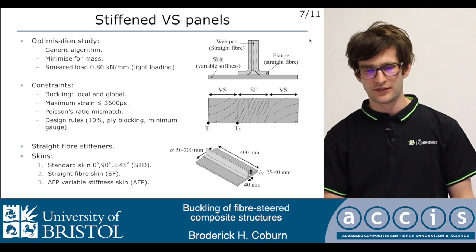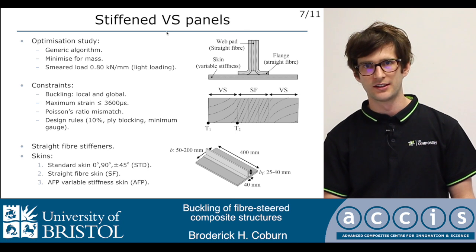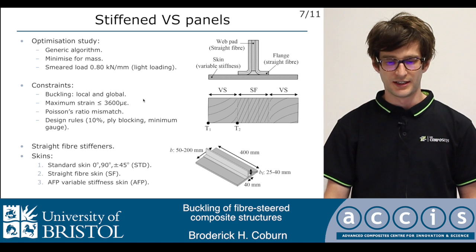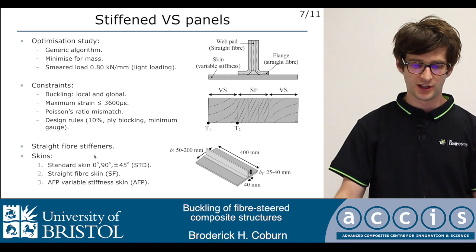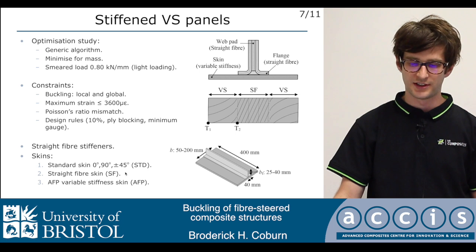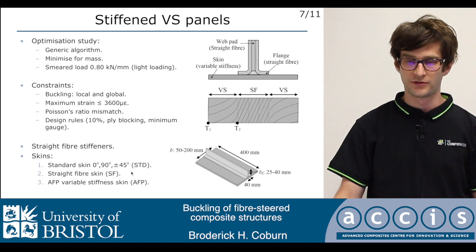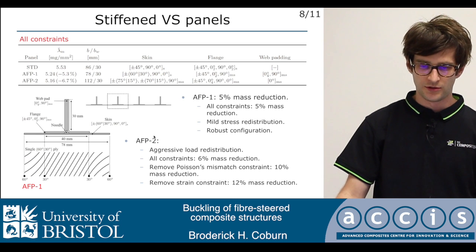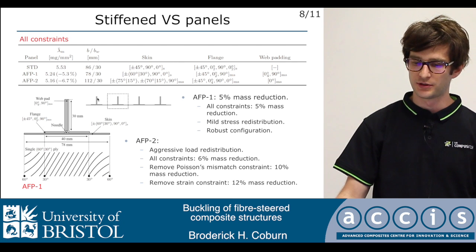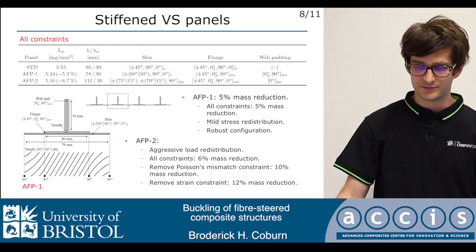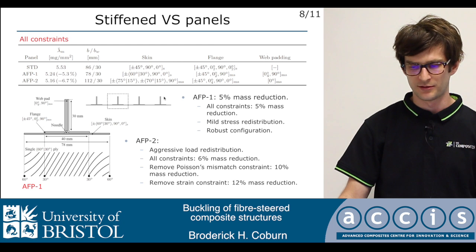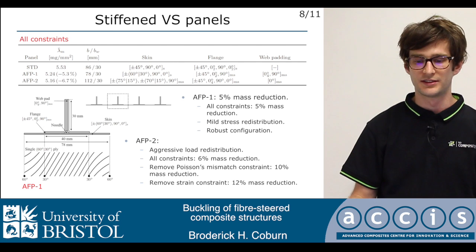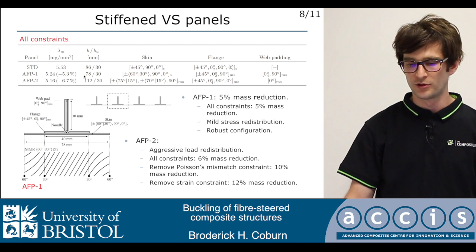We performed an optimisation study on a stiffened variable stiffness panel using a genetic algorithm, considering a load case of 0.8 kilonewtons per millimetre. We included practical design constraints such as maximum strain, Poisson's ratio mismatch, and all the different failure modes that can occur in a stiffened panel. We looked at three types of skins: a standard skin with standard ply angles, a straight fibre skin allowing a plus-or-minus theta ply, and variable stiffness skins manufactured with AFP. The results show some improvement, though much reduced from the initial 80%, largely due to the additional practical constraints introduced. Removing some constraints, such as Poisson's ratio mismatch or strain limits, yields additional improvements.